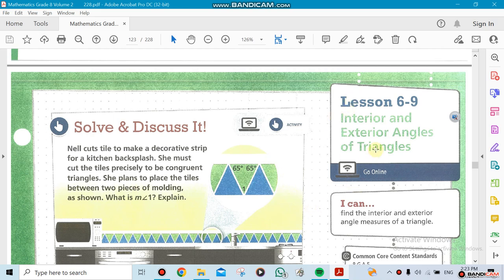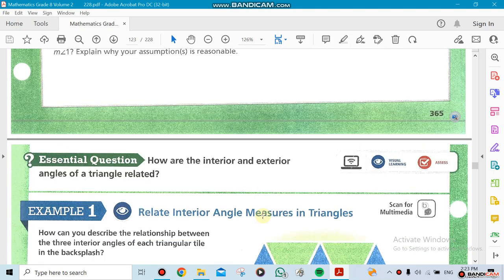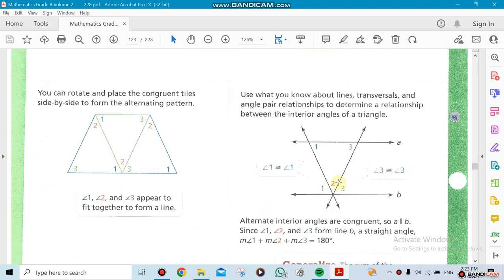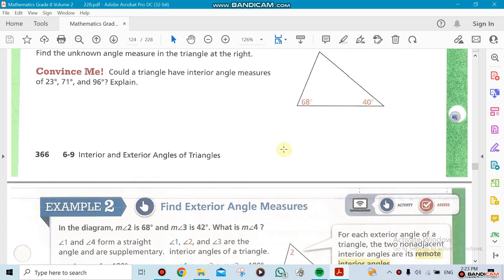Lesson 6-9: the interior and exterior angles of a triangle. This lesson we're going to be talking about the angles, some of the interior angles for triangles and also the exterior angle and the relationship with the angles inside the triangle itself. We're going to have an equation for it.